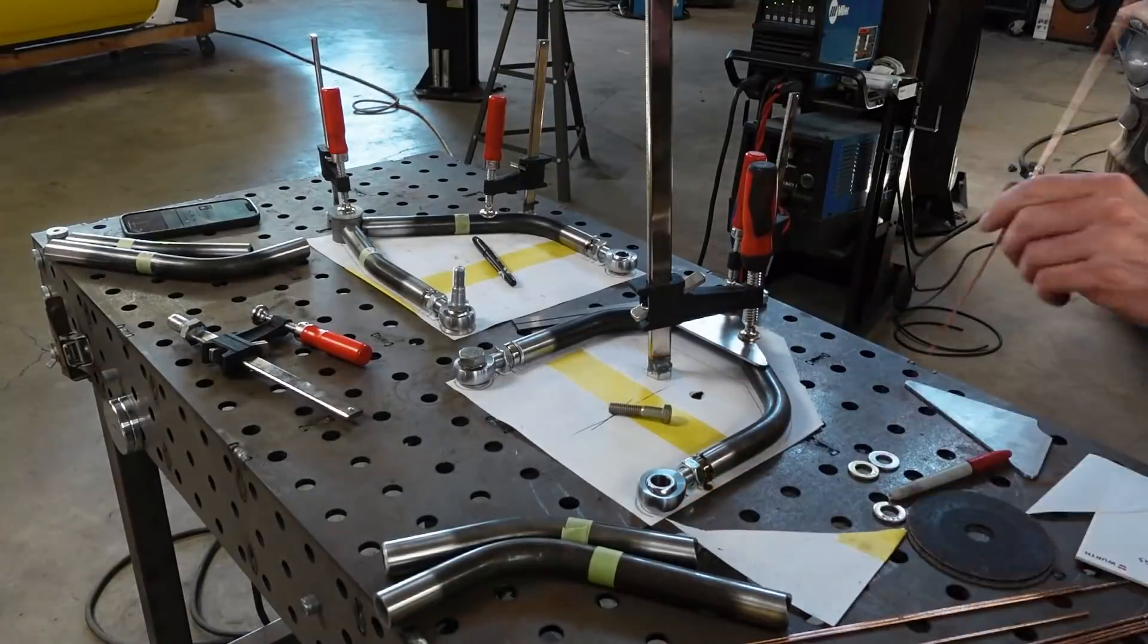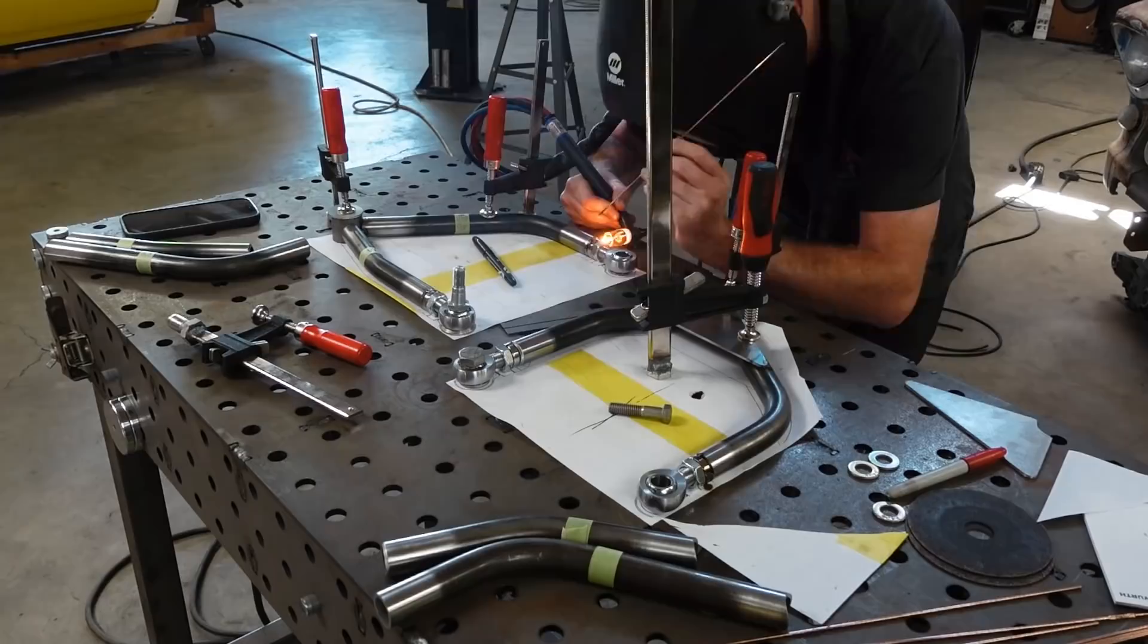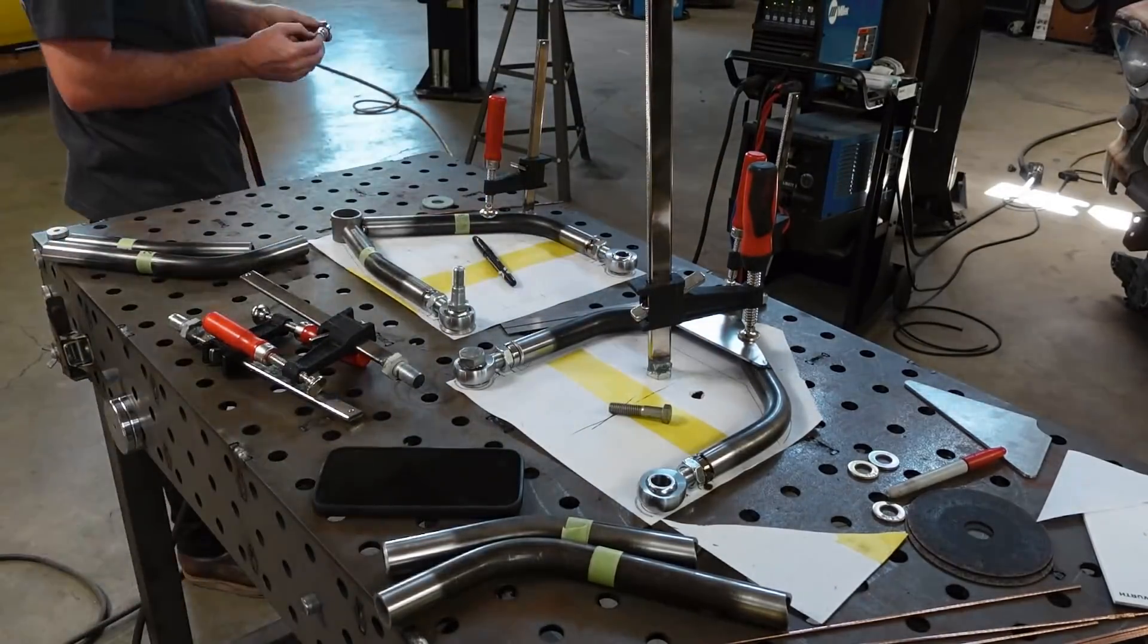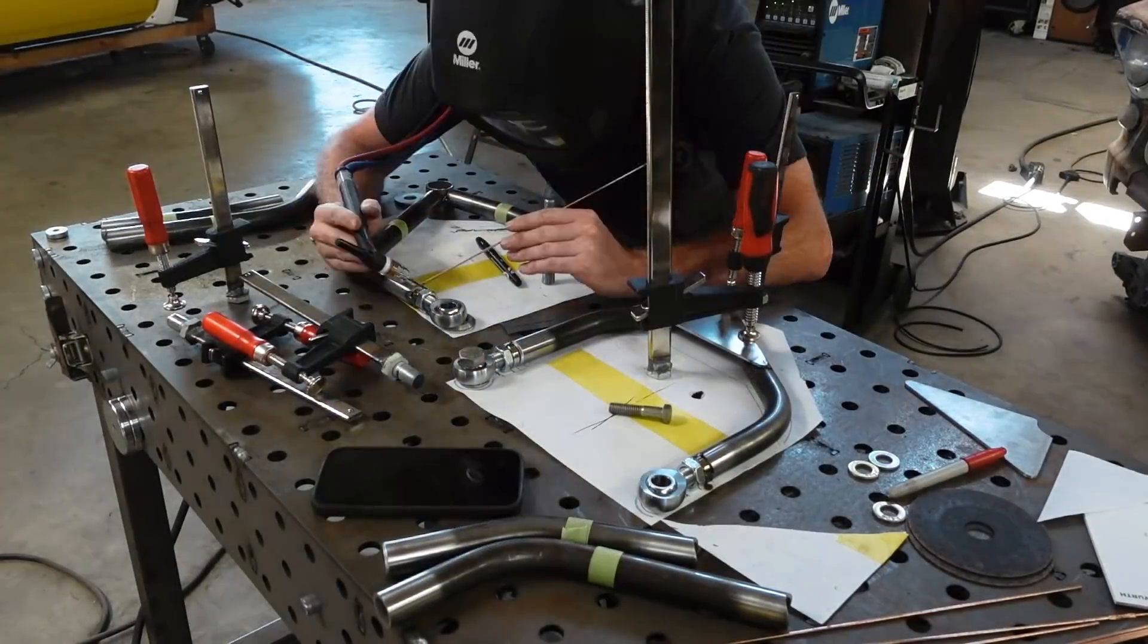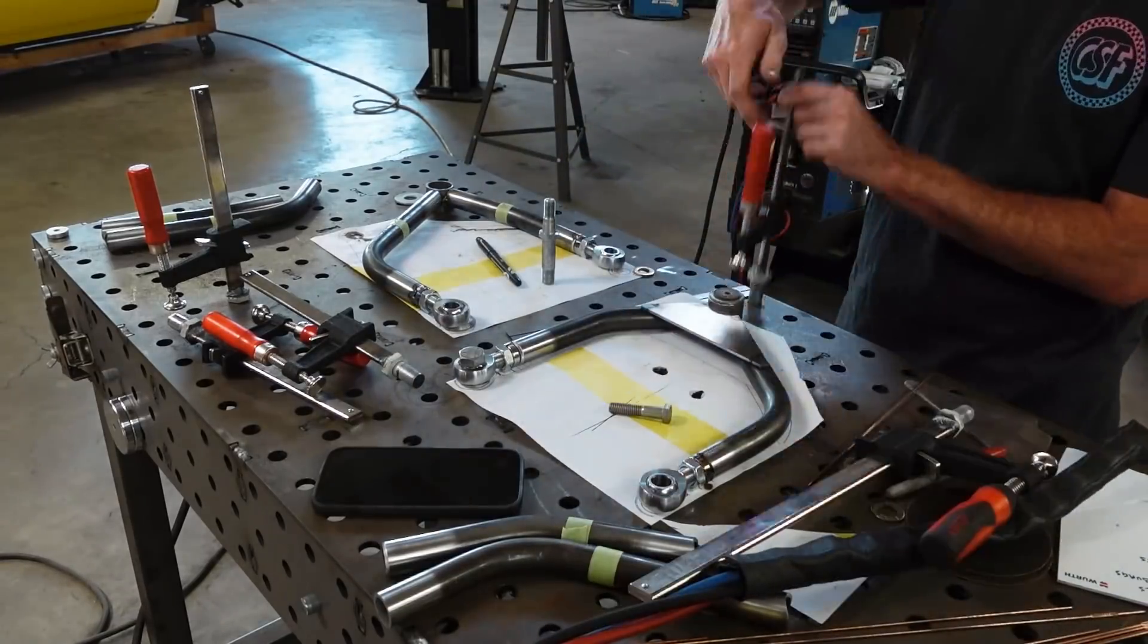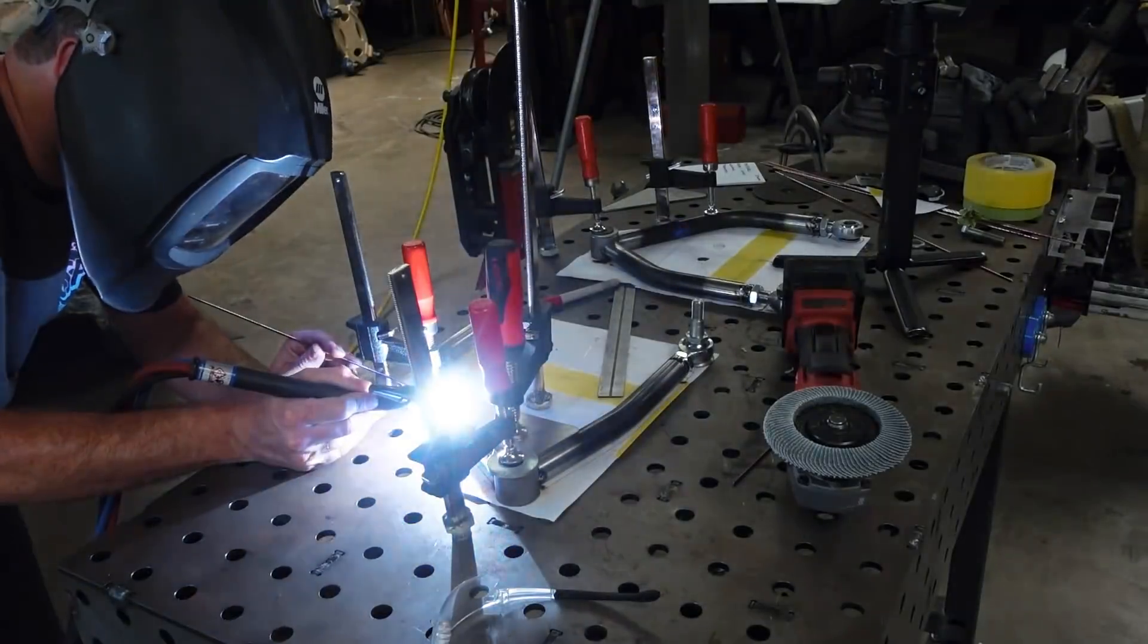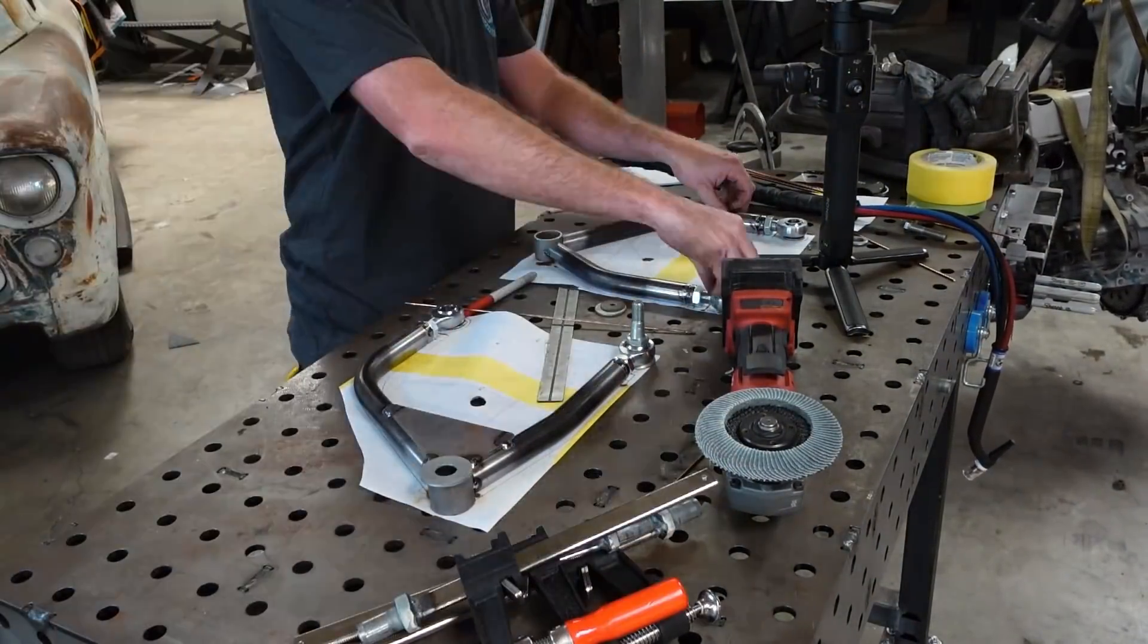I tacked everything else together so that these control arms could be considered loosely complete, although not fully welded. And then I had to do this entire process over a second time, because what you've seen here is just the construction of one upper front and one upper rear. We need two of each, so off-camera I did the rinse and repeat and made two more.